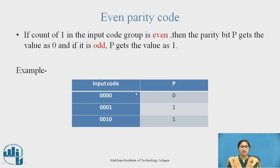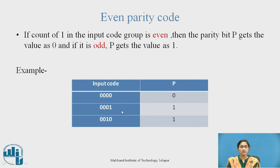Even Parity Code: if the count of 1s in the code group is even, then parity bit P gets the value 0. If it is odd, P gets the value 1. In this example, the input code is given with the parity bit P generated at the output. The count of 1 is even, so P gets the value 0. In another two examples, the count of 1 is odd, so P gets the value 1.